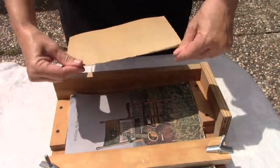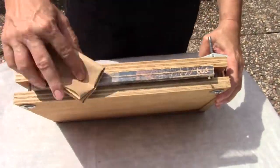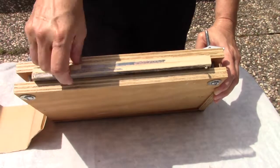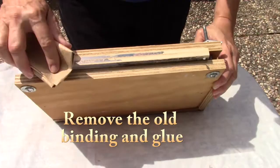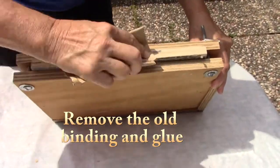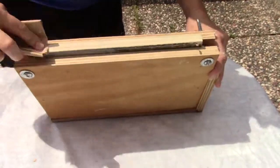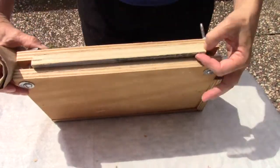I'm using a hundred grit sandpaper. I'm going to scuff it up as much as possible and get it as clean as I can. And you want to remove the old glue and the binding. And you kind of want to scuff up your pages but not so much it's going to make a mess. And you want to try to get it as even and as smooth as you possibly can.